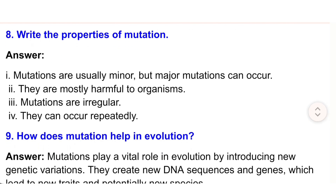8) Write the properties of mutation. Answer: i) Mutations are usually minor but major mutations can occur. ii) They are mostly harmful to organisms. iii) Mutations are irregular. iv) They can occur repeatedly.